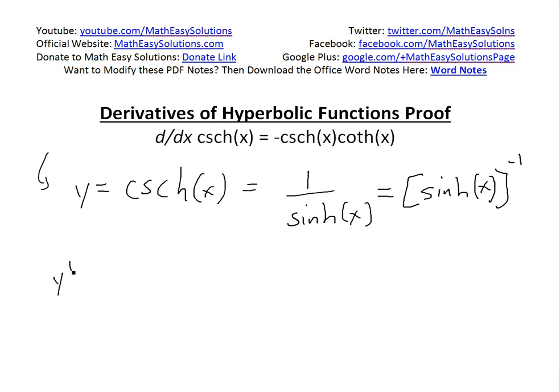The derivative using power rule initially gives us negative one, then sinh of x, and we subtract the power by one to get negative two. Now using chain rule, take the derivative of the inside function, which is sinh of x, and that equals cosh of x.